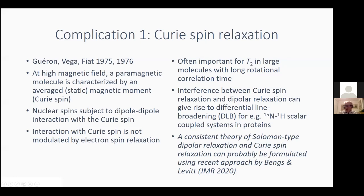I'm glad to see that Malcolm is here, because I want to make a reference to his work from earlier this year. I think the theory they presented, which is valid beyond the high-temperature regime, could in a useful way be applied to Curie spin relaxation, giving a consistent description combining Solomon-type theory and Curie spin theory.